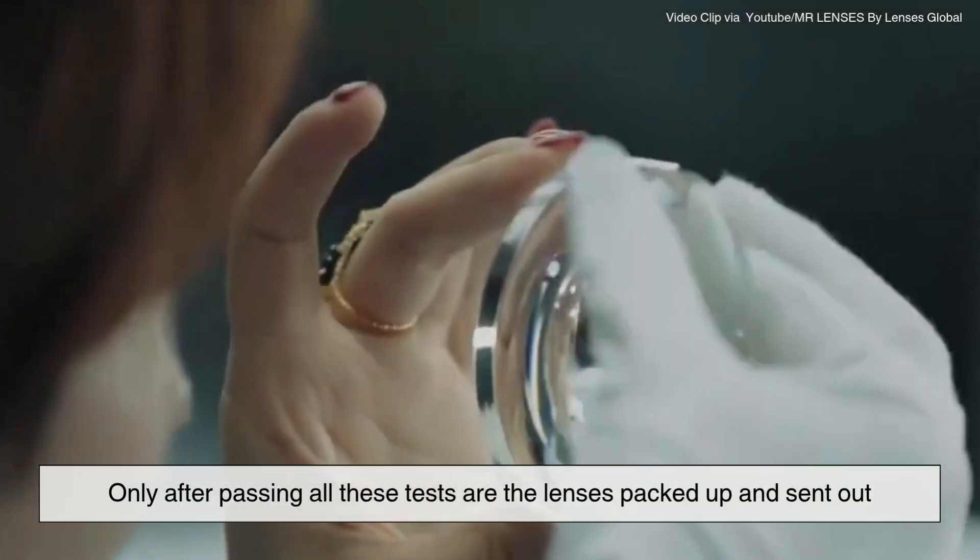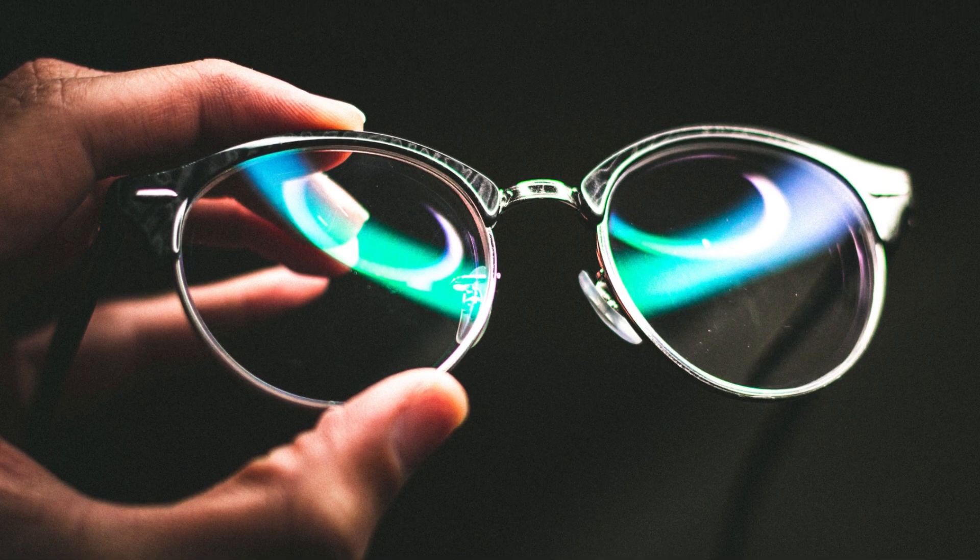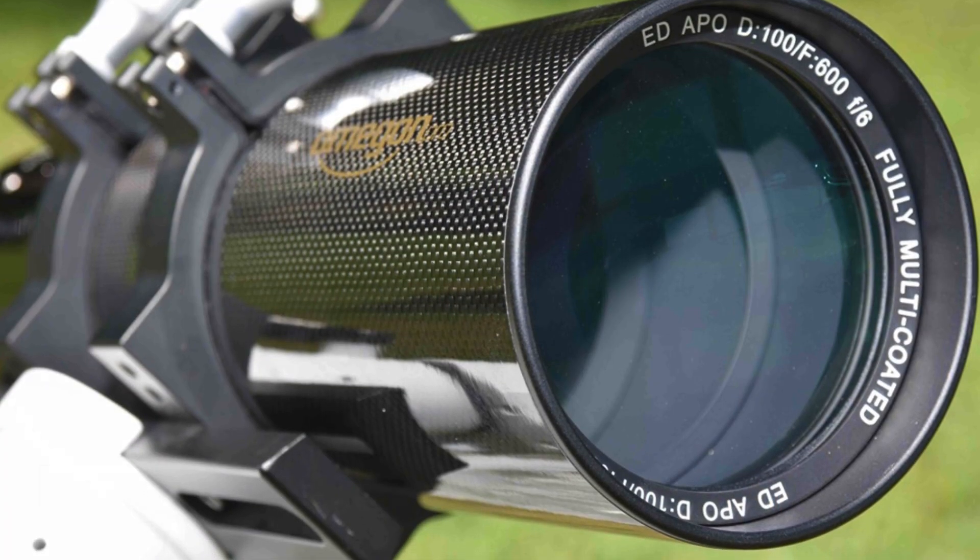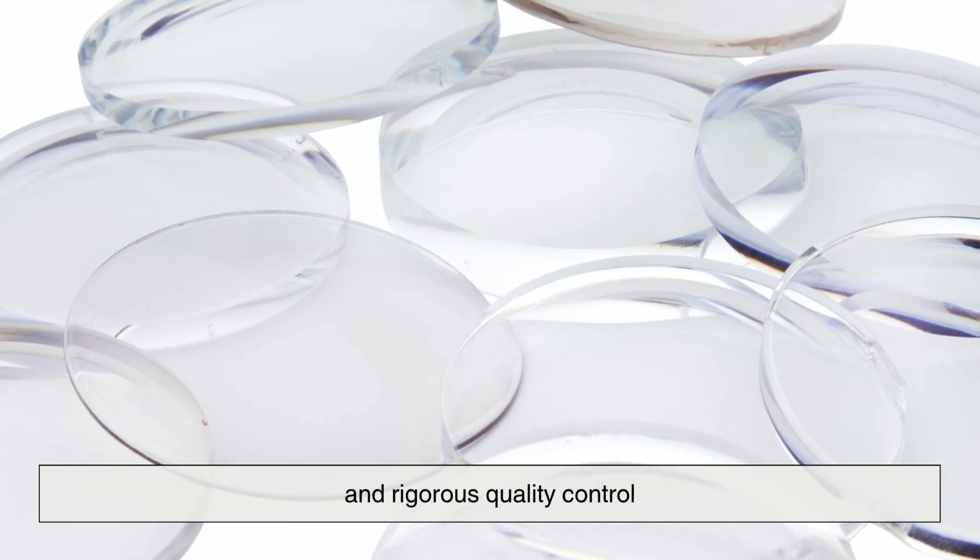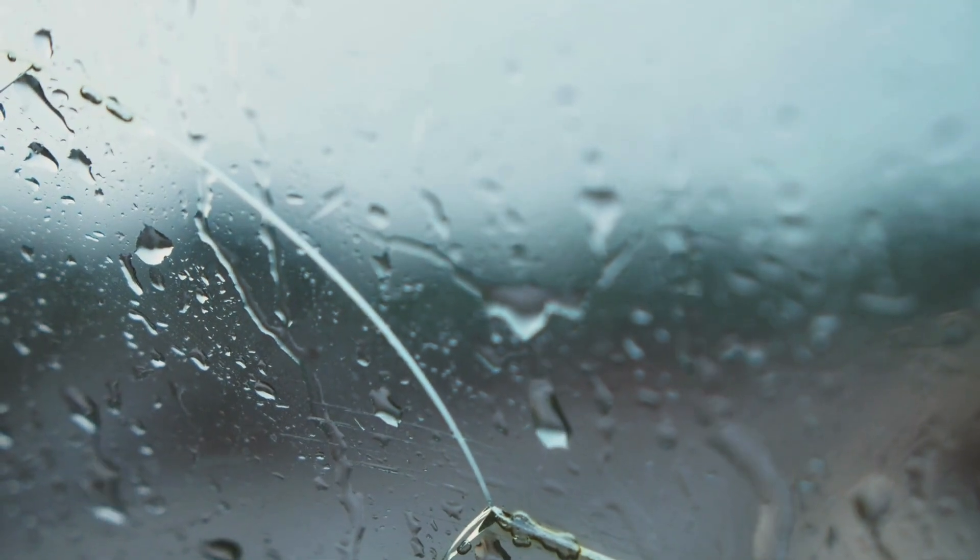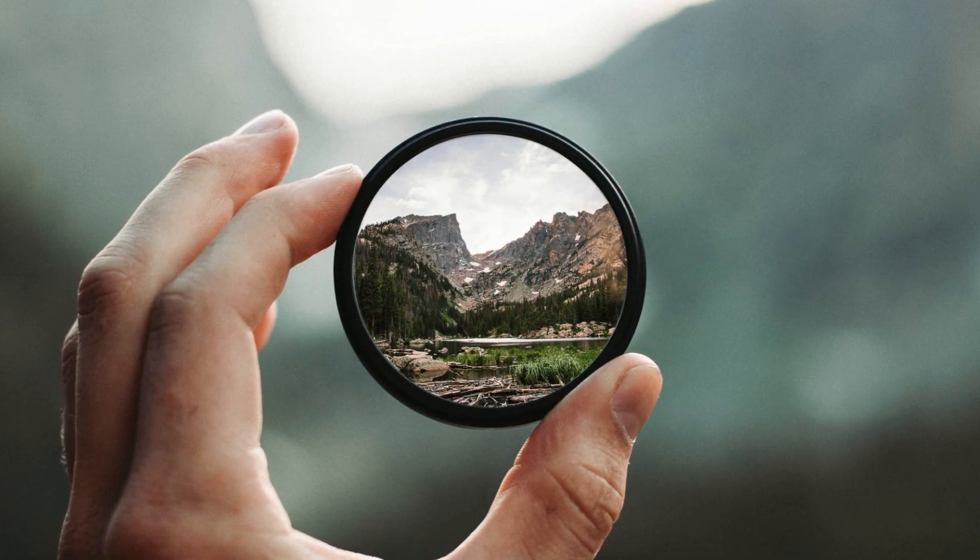Only after passing all these tests are the lenses packed up and sent out, ready to help someone see better, take amazing photos, or explore the universe. Each lens represents the culmination of precision engineering and rigorous quality control. Even the tiniest flaw can distort an image or compromise vision, so nothing is left to chance. From your camera to your glasses to a space telescope, these lenses are built to perform flawlessly.